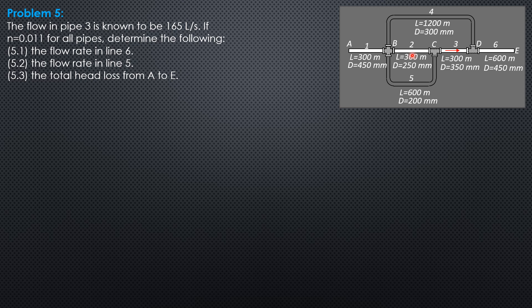Then from there, Q2 plus Q5 equals 165. So we can compute one of the discharges, either Q2 or Q5. Knowing Q2 or Q5, we can compute the head loss — for example, in pipe 2. After computing the discharges, we can compute the head loss in pipe 2. Then knowing the head loss in pipe 2 combined with the head loss in pipe 3, we can compute the head loss in pipe 4.